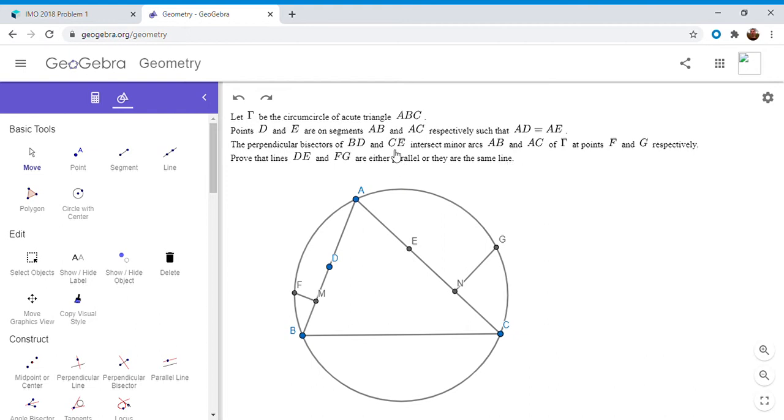We want to show that DE and FG are either parallel or they're the same line. I'm going to consider if they're the same line, I'm just going to call that parallel. How do we get started here? I had kind of a unique approach to this problem.